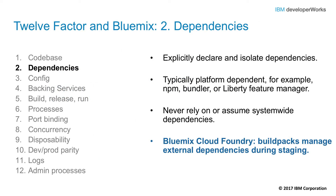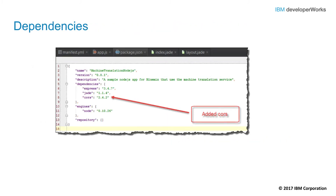Factor number two: dependencies. Explicitly declare and isolate your dependencies. This is the bane of many developers' existence — an example of the old 'it works on my laptop, but when I go to production, it doesn't work' scenario. In Bluemix Cloud Foundry, build packs can take care of assembling the dependencies for you. The cores package is specified for this Node.js application in the package.json file. Whether running locally after an npm install, or on Bluemix after the build pack assembles a droplet, there will be the same package and version available for the application.